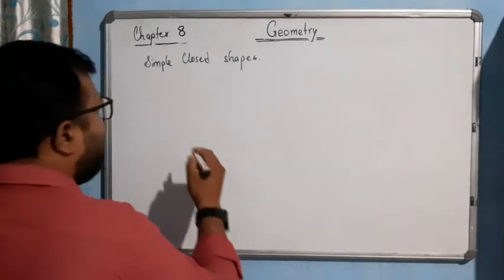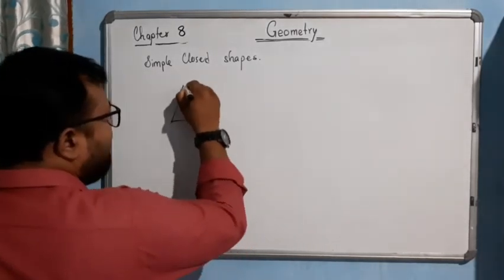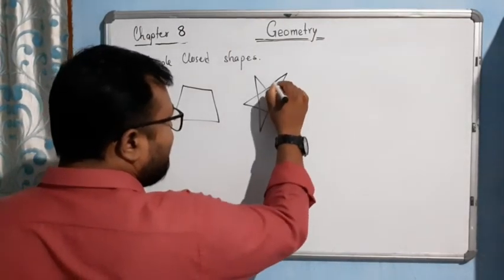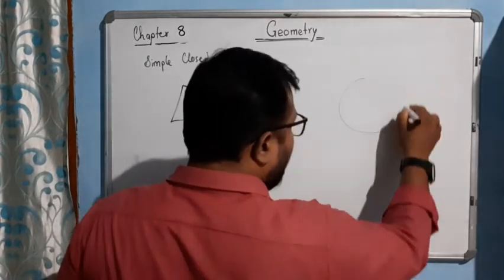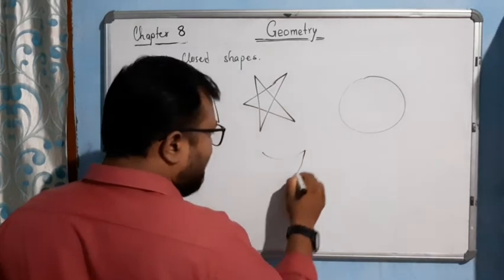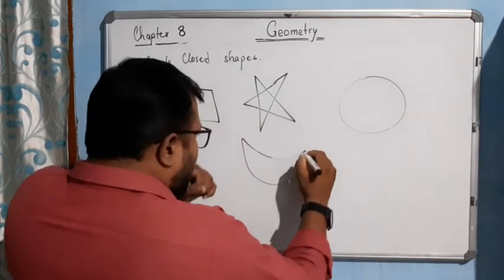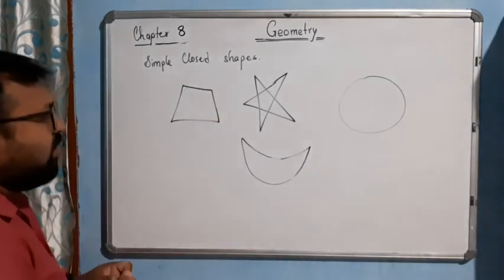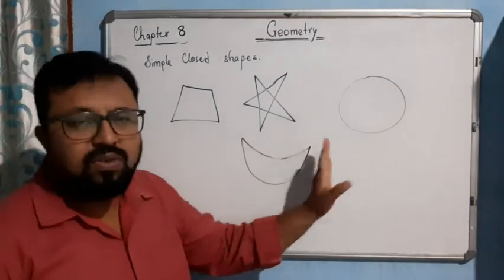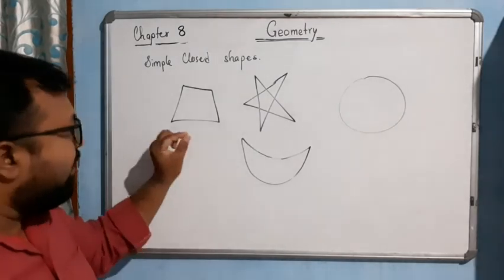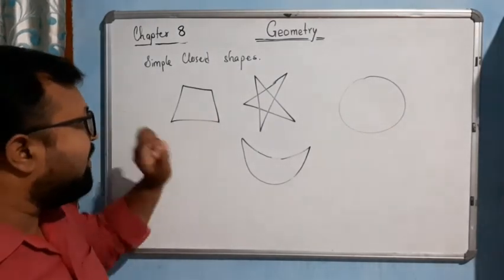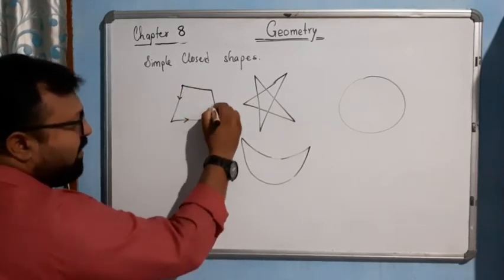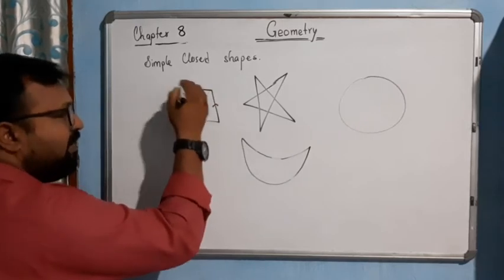Now if I draw like this, or like this — these types of figures are closed figures, because the starting point and the end point meet each other. Suppose we start from here, start moving in this direction, and see — it ends at the same point, the beginning point.